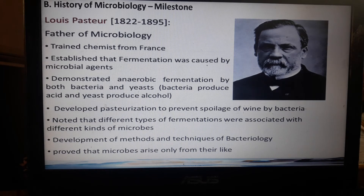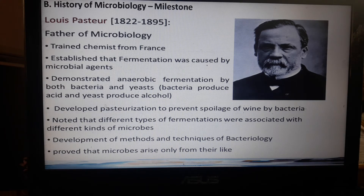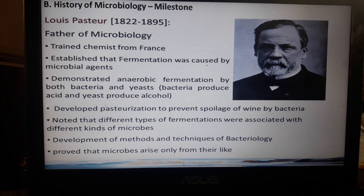He demonstrated anaerobic fermentation of both bacteria and yeast: bacteria produce acid, while yeast produces alcohol. Anaerobic means these are bacteria that live without oxygen. He also developed pasteurization to prevent spoilage by bacteria — pasteurization wherein milk is heated at 40 to 60 degrees to kill certain bacteria, especially cow's milk produced by dairy farms. He also noted that different types of fermentations were associated with different kinds of microorganisms that ferment alcohol.